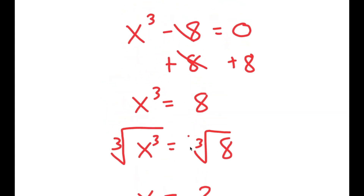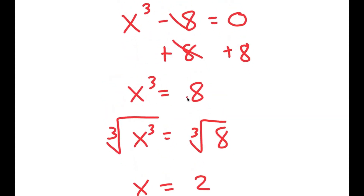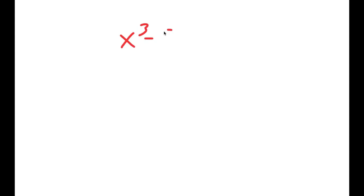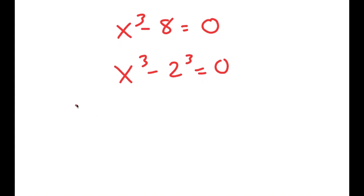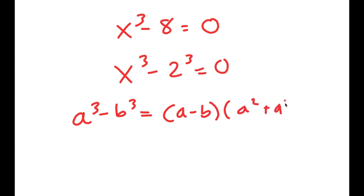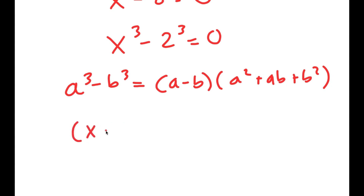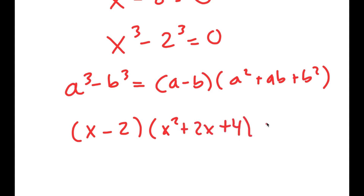But actually there are more than one solution to this equation. I'm going to rewrite x to the power of 3 minus 8 equals 0 by rewriting 8 as 2 to the power of 3, giving me x cubed minus 2 cubed equals 0. Now I'll use the difference of cubes formula: a cubed minus b cubed equals (a minus b)(a squared plus ab plus b squared). This turns into x minus 2 times the quantity x squared plus 2x plus 4, equals 0.